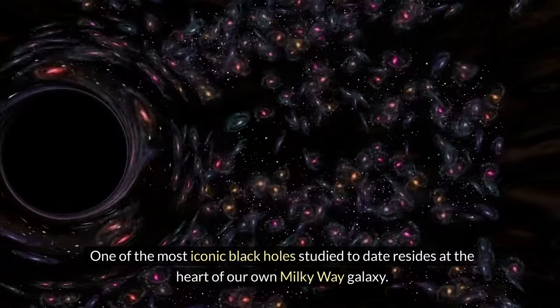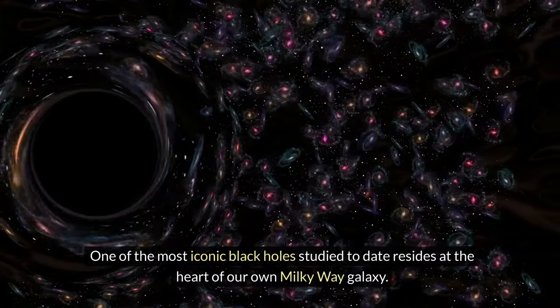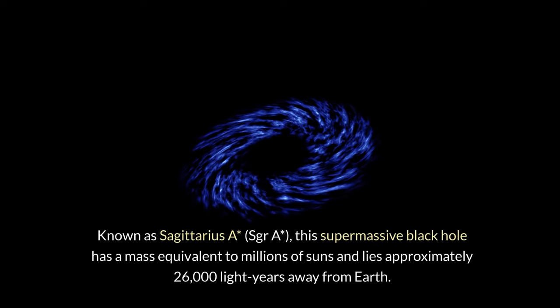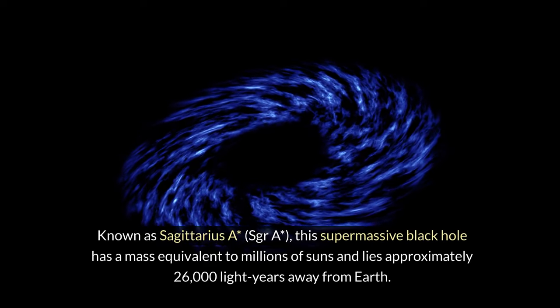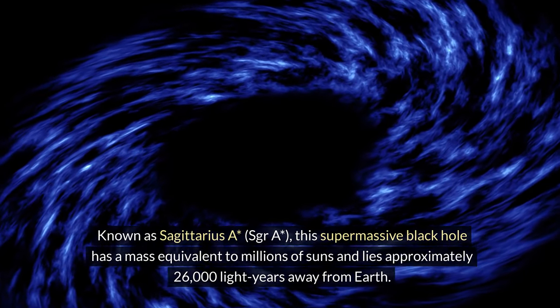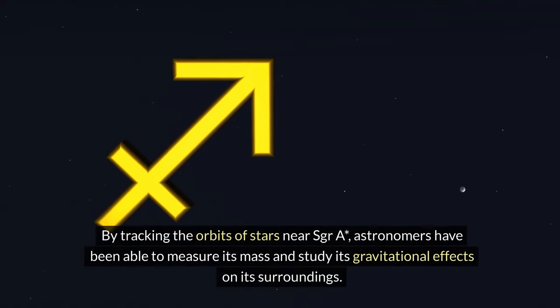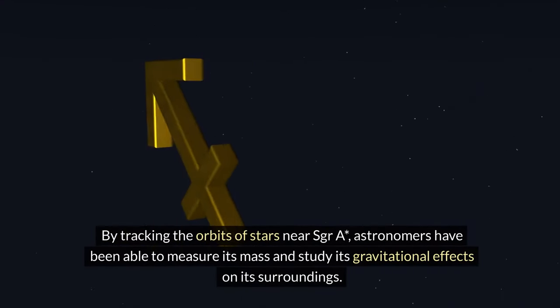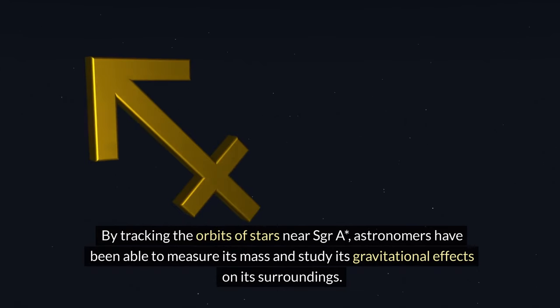One of the most iconic black holes studied to date resides at the heart of our own Milky Way galaxy. Known as Sagittarius A* (SGR A*), this supermassive black hole has a mass equivalent to millions of suns and lies approximately 26,000 light-years away from Earth. By tracking the orbits of stars near Sagittarius A*, astronomers have been able to measure its mass and study its gravitational effects on its surroundings.